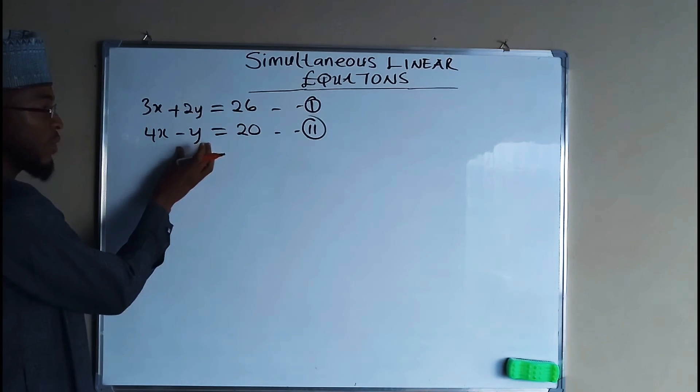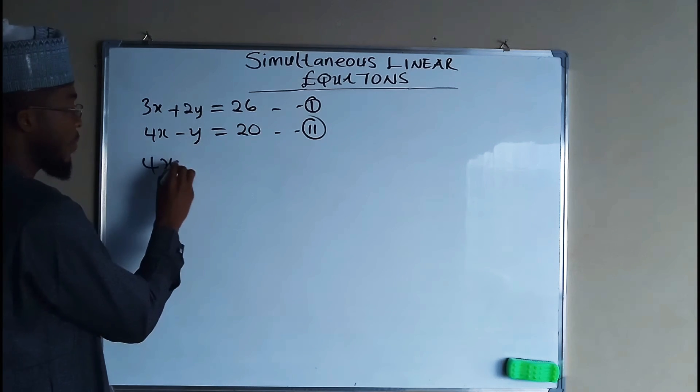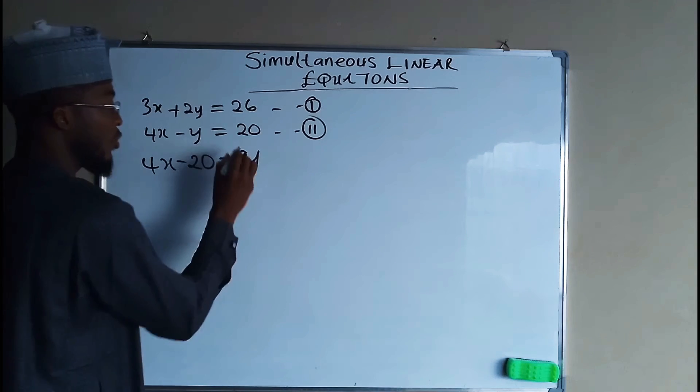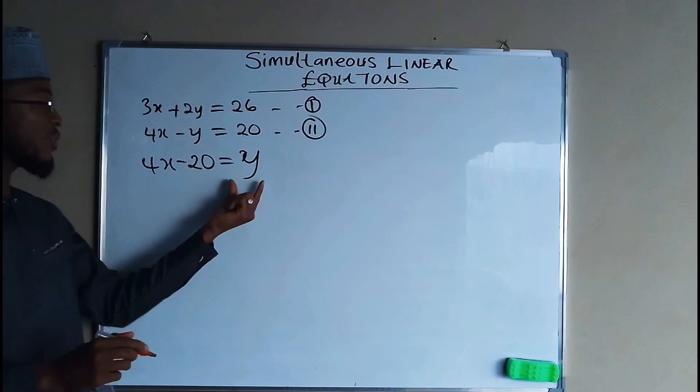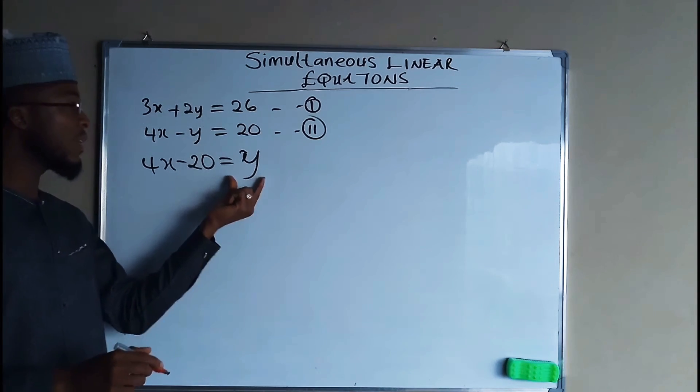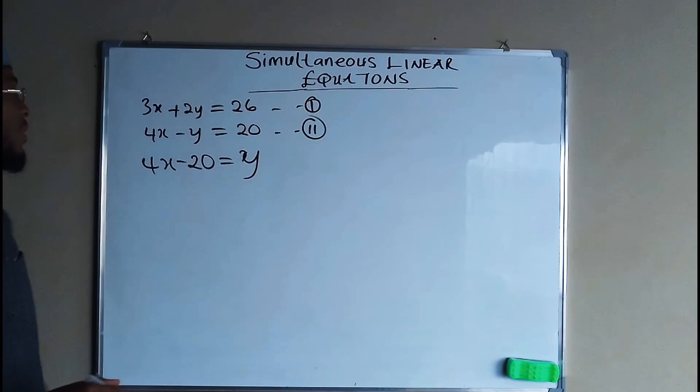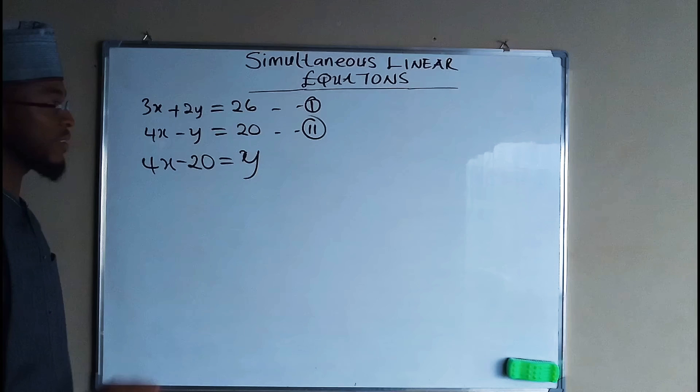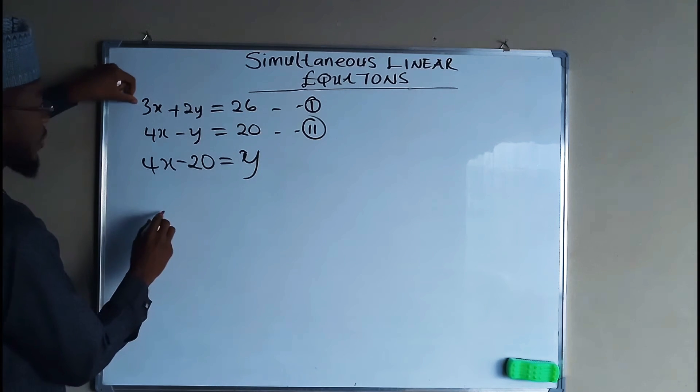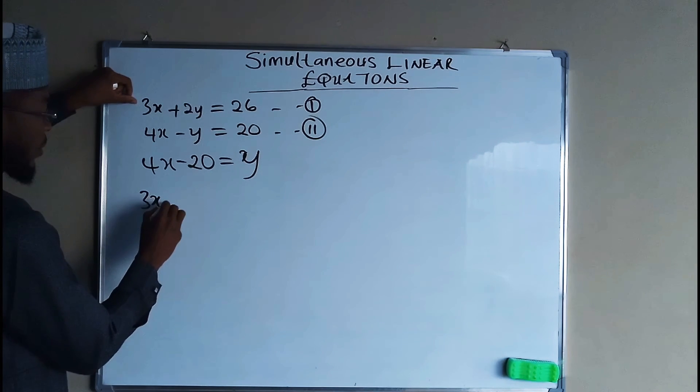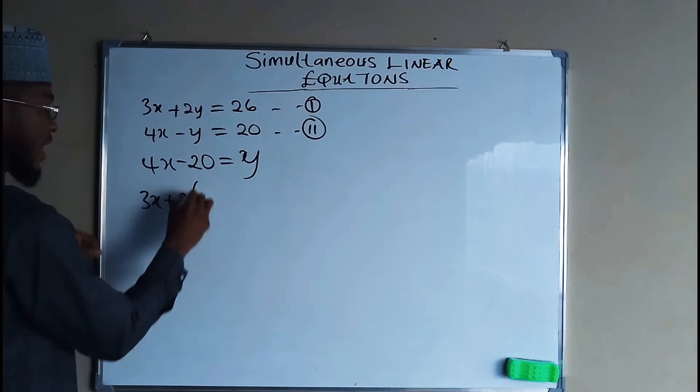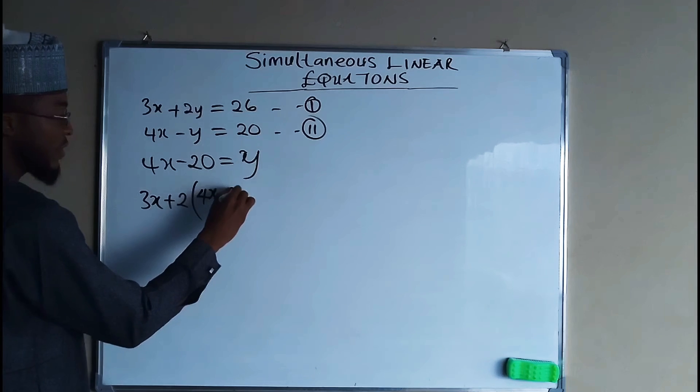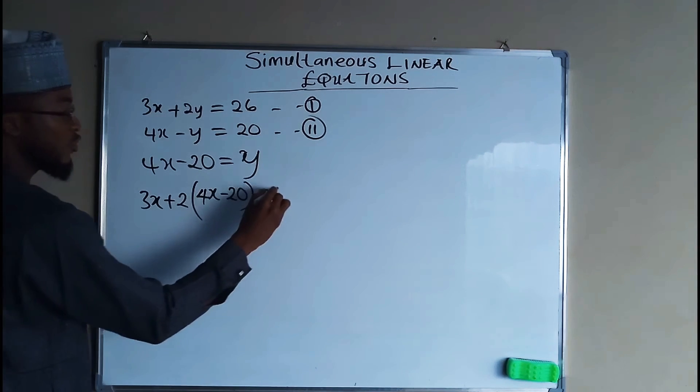In equation two, 4x minus 20 is equal to y. Now we can substitute the value of y into equation one. So wherever you see y, you replace it with 4x minus 20. So in equation one, we have 3x plus 2 times the whole of the value of y, which is 4x minus 20, and this is equal to 26.